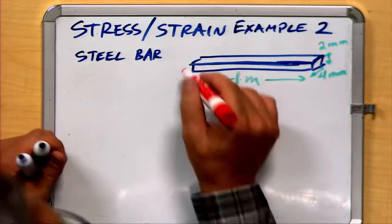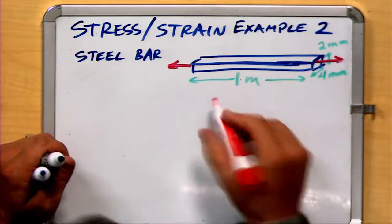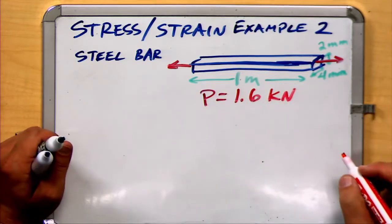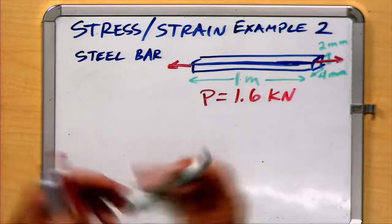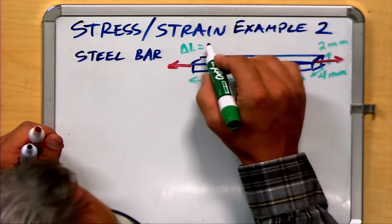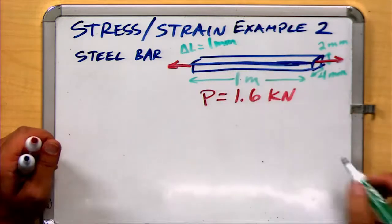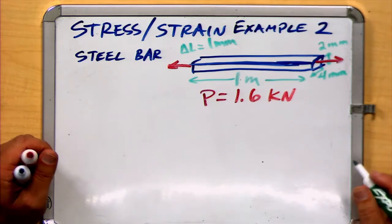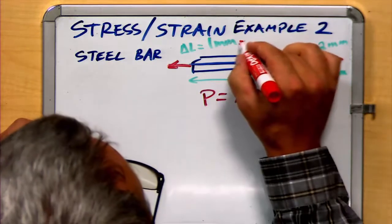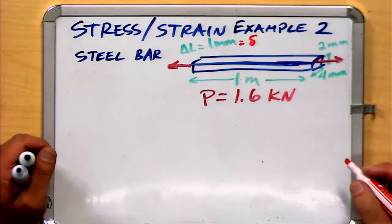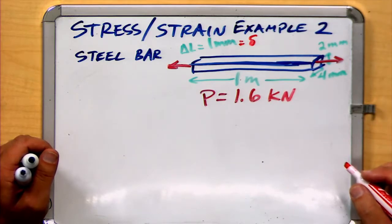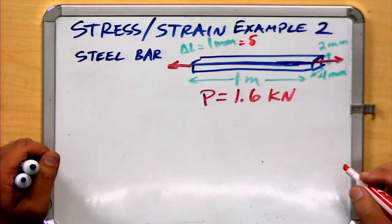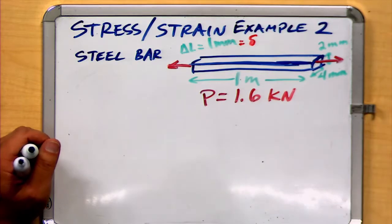When we apply an axial force to the bar of 1.6 kilonewtons, we see a deformation of 1 millimeter. Occasionally, one of the letters to represent deformation is the small Greek letter delta, which will sometimes be used for representing deformation as well. In this case, we have a change in the length of 1 millimeter when we apply a force of 1.6 kilonewtons.